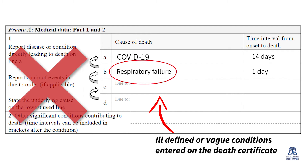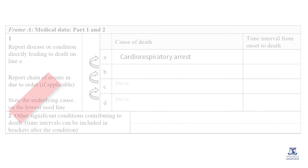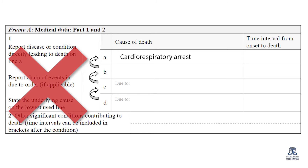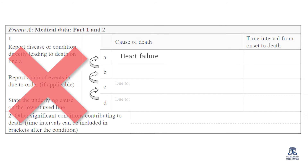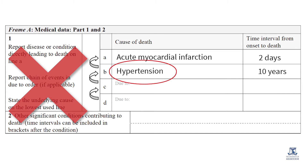Entering ill-defined or vague conditions on the death certificate is also an error. These are of no value to public health officials as they do not provide useful information to help design preventative health programs. For example, cardiorespiratory arrest and heart failure are considered ill-defined causes as they are modes of dying. Similarly, symptoms or signs such as headache and fever, and intermediate causes such as portal hypertension or secondary hypertension, do not provide useful evidence and should therefore be avoided.